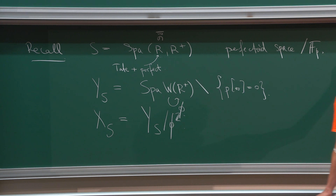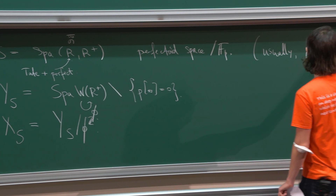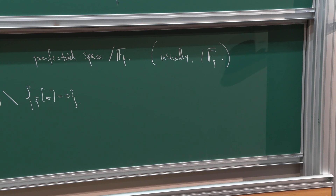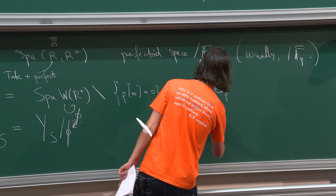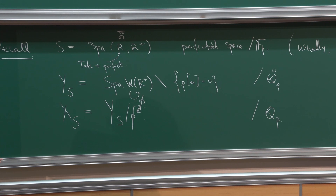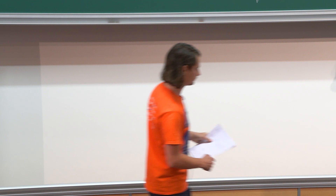I will always want to work over an algebraically closed base field, so this FP-bar — that's why I chose it in the beginning. This would be an adic space over the maximum unramified extension QP-breve. But because you take the quotient by Frobenius, this is really just an adic space over QP.